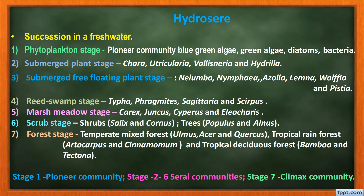Hydrosere — succession in a freshwater pond or lake. Stage 1, Phytoplankton stage: pioneer community includes green algae, blue-green algae, diatoms, and bacteria. Stage 2, Submerged plant stage: plants are totally underwater — examples: Chara, Utricularia, Vallisneria, Hydrilla. Stage 3, Submerged free-floating plant stage: some portions of the plant are under water and some float freely — examples: Nelumbo, Nymphaea, Azolla, Lemna, Wolffia, and Pistia.